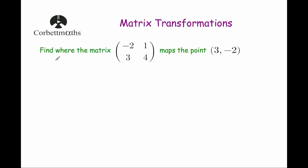Our first question says: find where the matrix minus 2, 1, 3, 4 maps the point (3, -2). So this is the transformation matrix, and this is the point that's going to be transformed or moved.